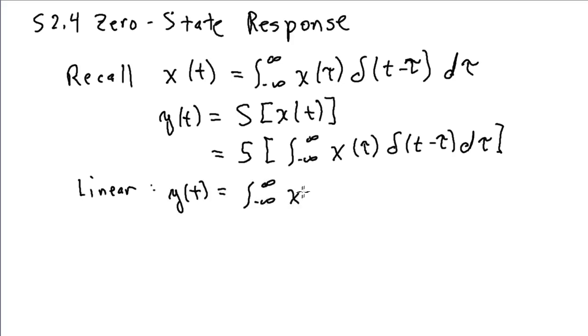Furthermore, X of tau is just a constant or a scalar with respect to time, so we can pull that outside of our system operation as well. That's a linearity property.